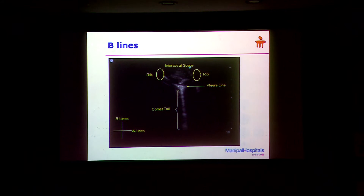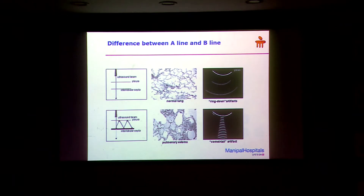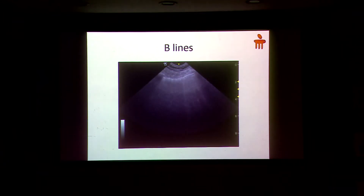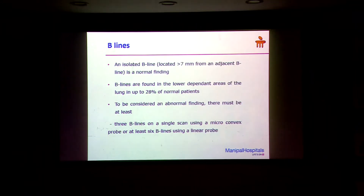A B-line goes from the pleura to the end of the screen. A-lines, as I said, happen in the normal lung when there is no fluid at all. When there is fluid, there is a reverberation artifact because of air and water interaction, and then you start getting B-lines. You can see some B-lines here — lines going from the pleura downward, moving with inspiration and expiration. They are B-lines.